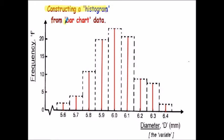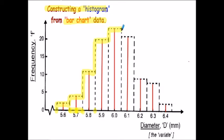What we're going to do now is construct a histogram from the bar chart data. I've still got the red bars shown but I've now merged the bars - these dashed lines show where I'm merging the bars into continuous data. What I do is go to the midpoint between each of the categories - so between 5.6 and 5.7, between 5.7 and 5.8. The difference between each category is always 0.1, so I'm going 0.05 forward and behind each category. So that 5.7 category will go forward 0.05 and back 0.05 as I merge the bars to form a histogram.